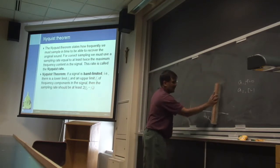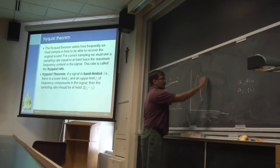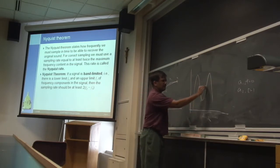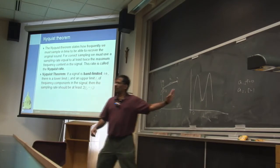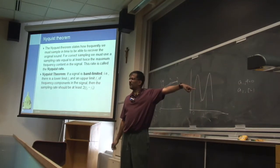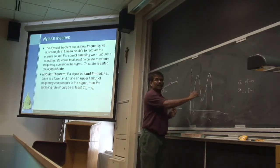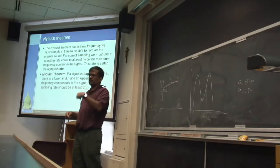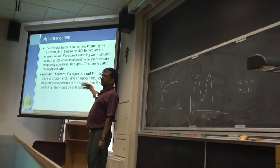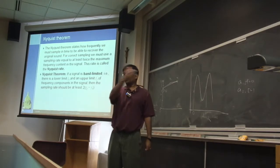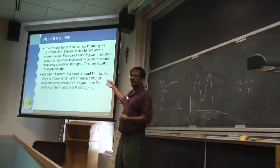Intuitively this makes sense. Think of a pure sine wave — one cycle per second is one hertz. You have to sample it at least twice per second. Otherwise you sample only at two identical points and miss the middle. The theory and proof is beyond our scope, but this is the basis: you can sample more than the minimum, but you must at least hit this rate to make it acceptable.